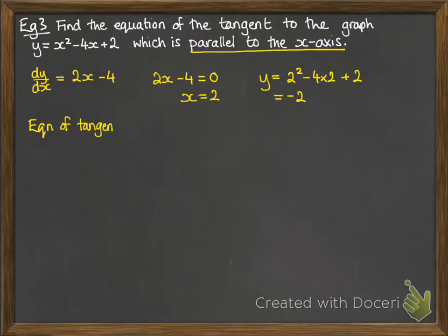Therefore, the equation of the tangent will be y equals minus 2, because it's a horizontal line through the coordinate y equals minus 2. And if you tried to put it into your y minus y₁, m, x minus x₁ equation, this is what it would look like.